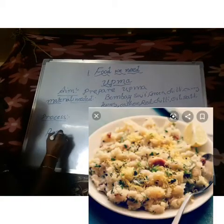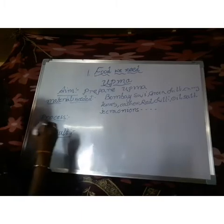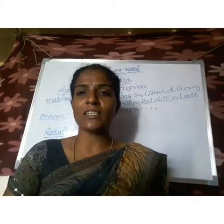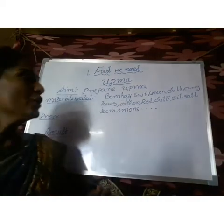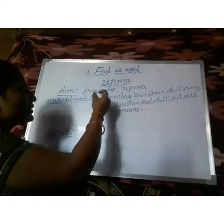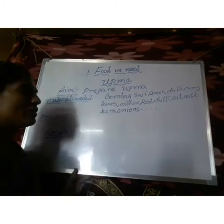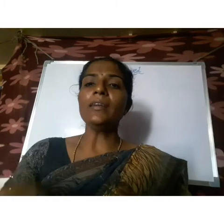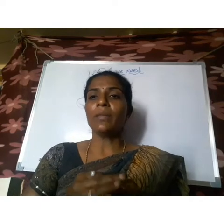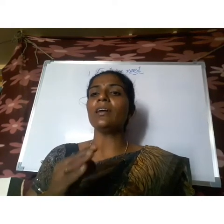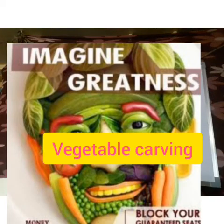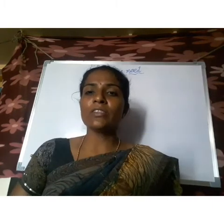This is the result. Like this, you have to write the preparation of your favorite food item — first the materials needed, then the process, and at last the result. Also, some people make designs with vegetables — that is called vegetable carving. Making designs with vegetables is called vegetable carving, and you have to try two vegetable carvings.